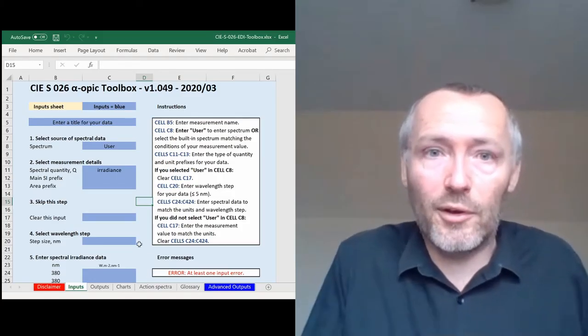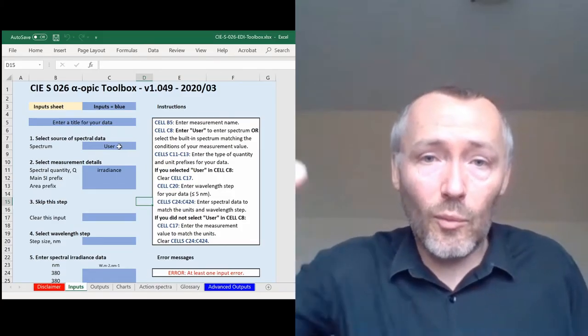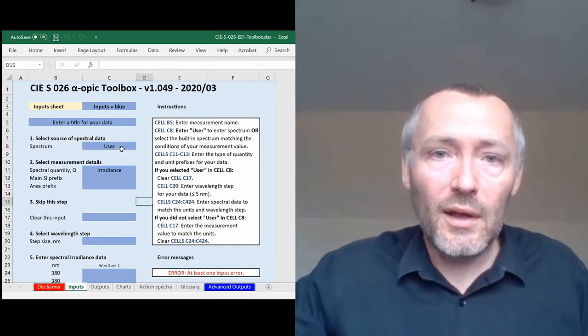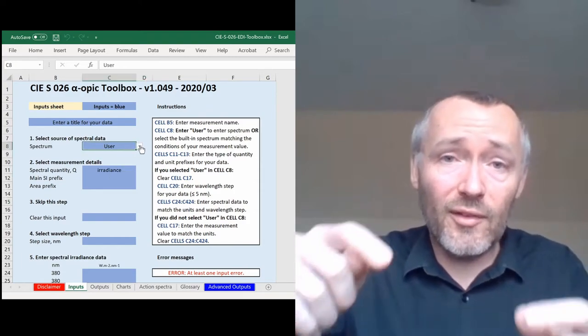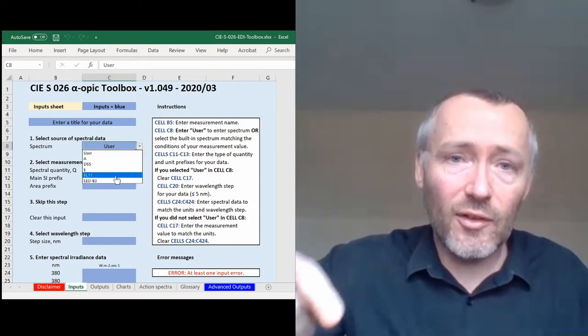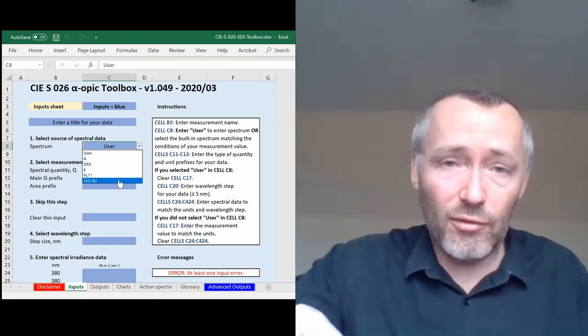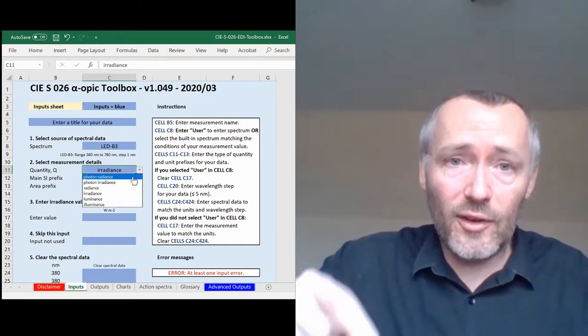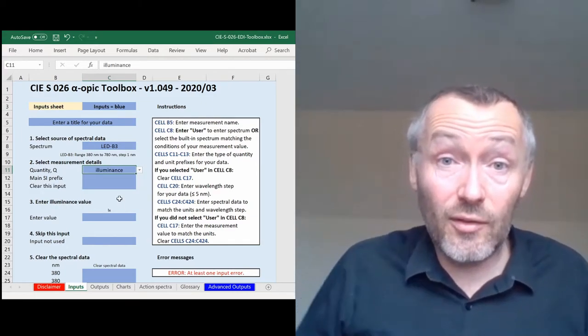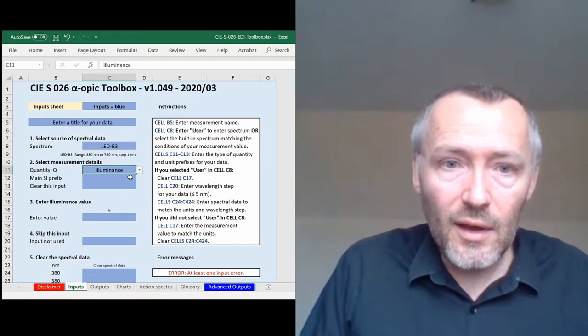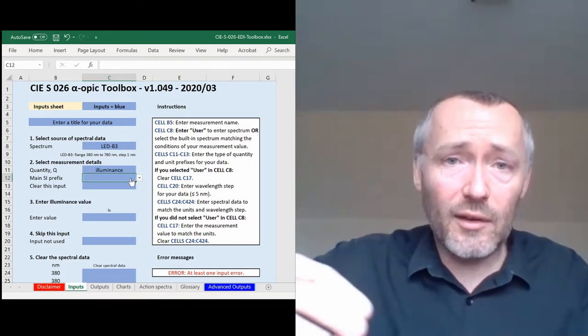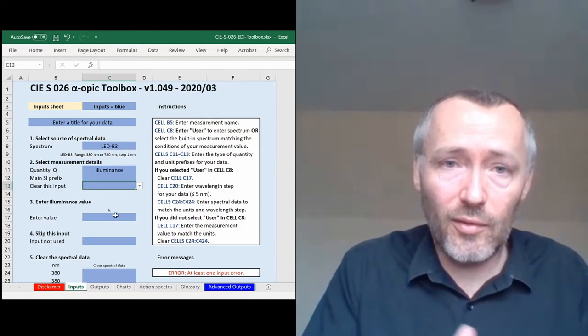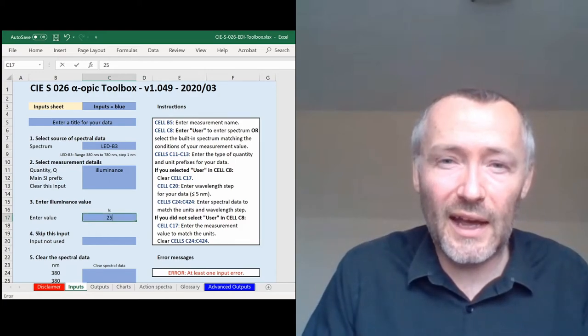Okay, so I'm going to go back to the input sheet. And one of the early inputs is to put in the spectrum that you want. And instead of using a user spectrum, I can select LED B3. And then if I carry on down, the type of quantity I want to enter from this list is the illuminance. And I don't need to put any prefixes in because you said it was 250 lux and lux is the units that this next input wants. So I write 250 in there.